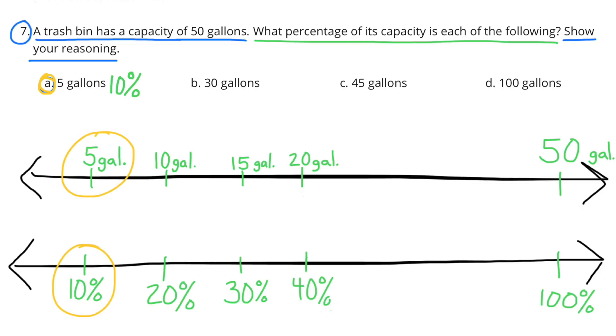A. 5 gallons is 10% the capacity of a 50 gallon trash bin. I used this double number line to help me figure this out. 100% capacity represents 50 gallons, and 10% capacity represents 5 gallons. So 5 gallons is 10% of the capacity of a 50 gallon trash bin.